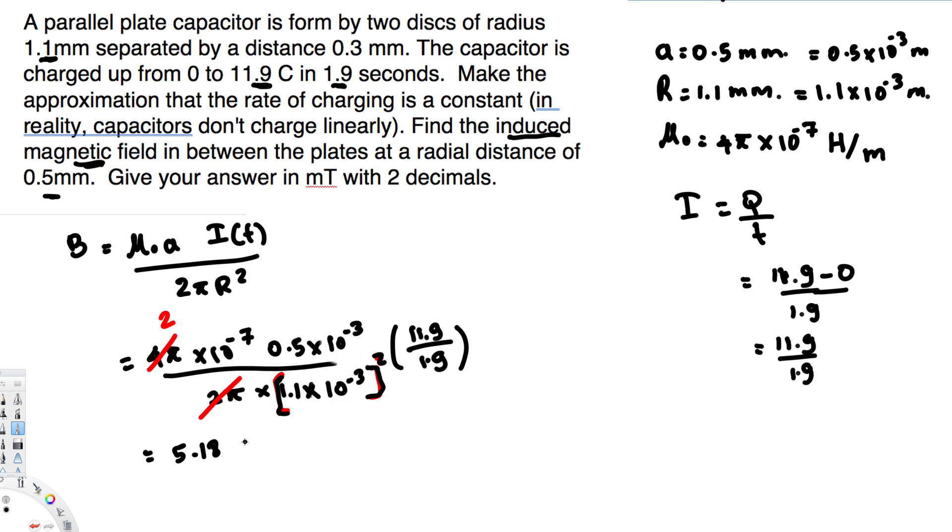5.18 times 10 to the power of minus 4 tesla. In the question they have asked to give the answer in millitesla and two decimal places, so this is going to be 0.52 millitesla and that's going to be the final answer. I hope this helps, thanks for watching.